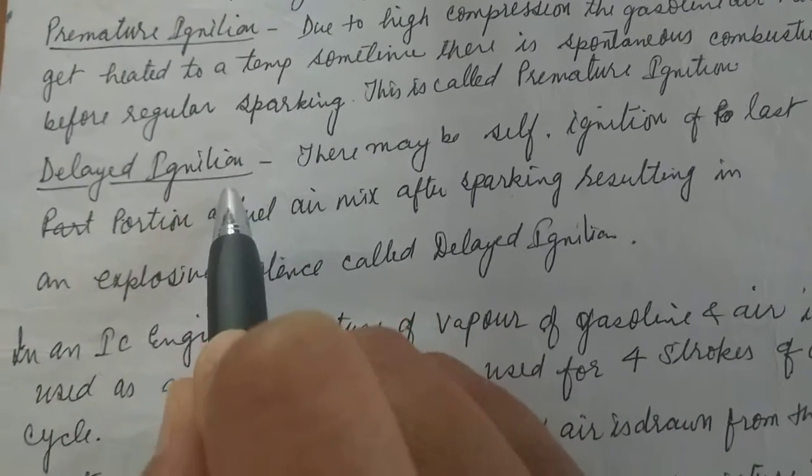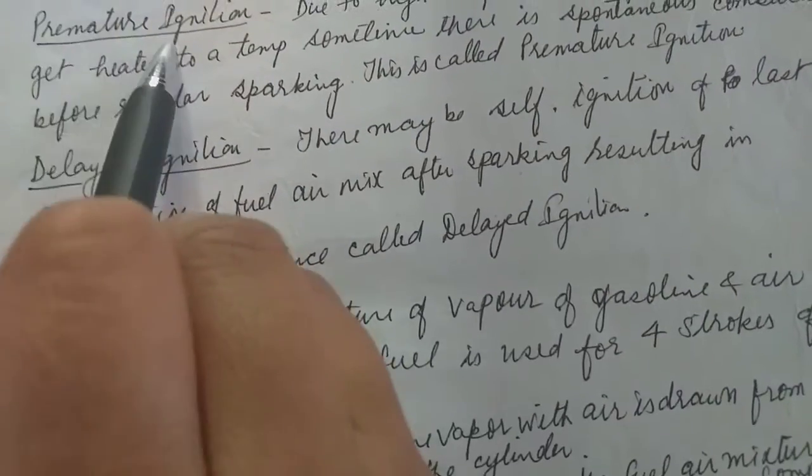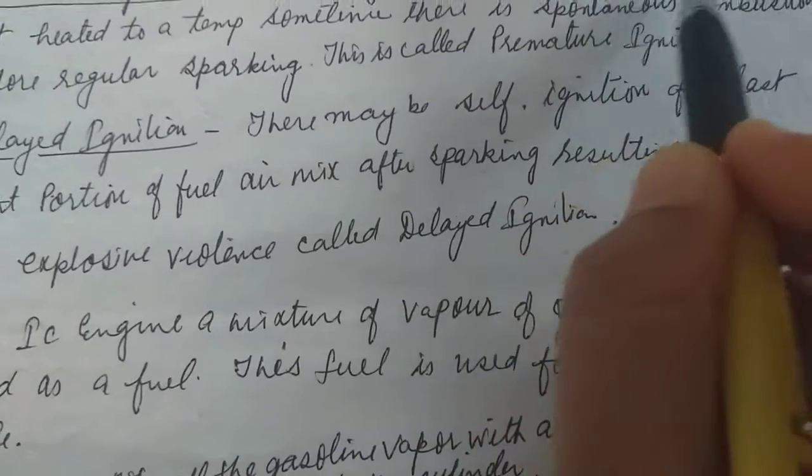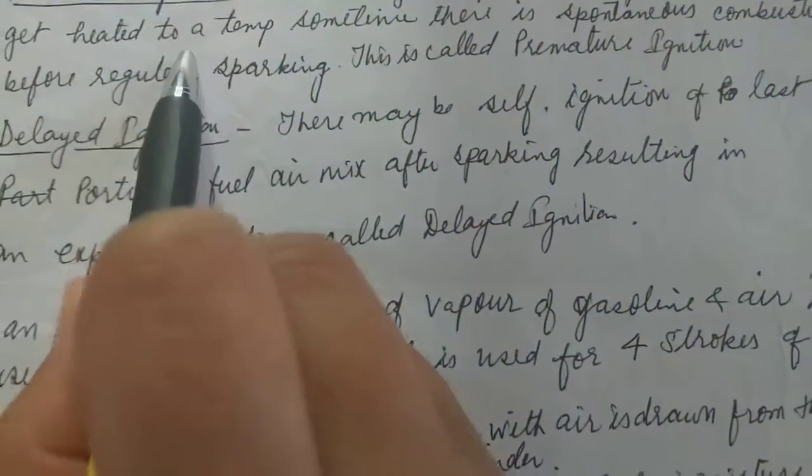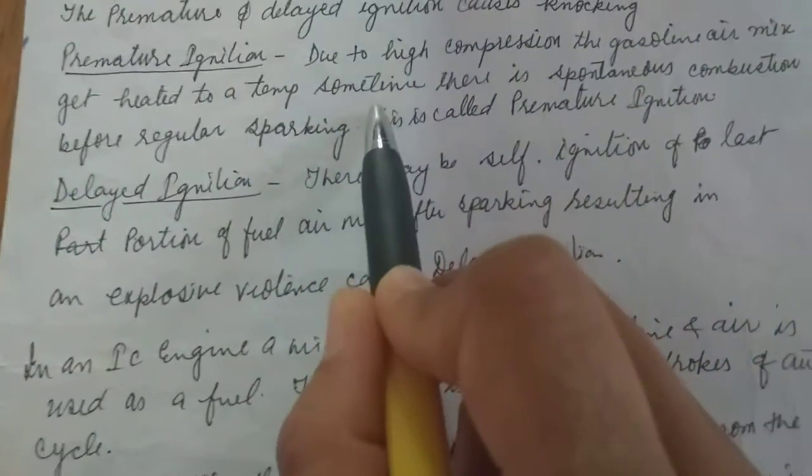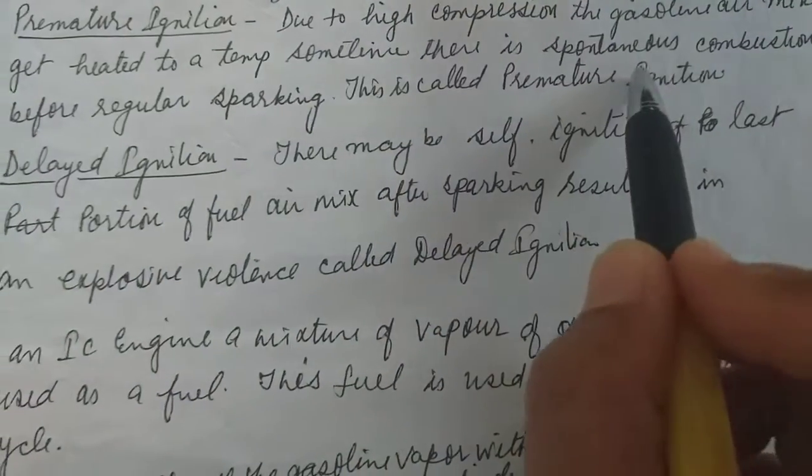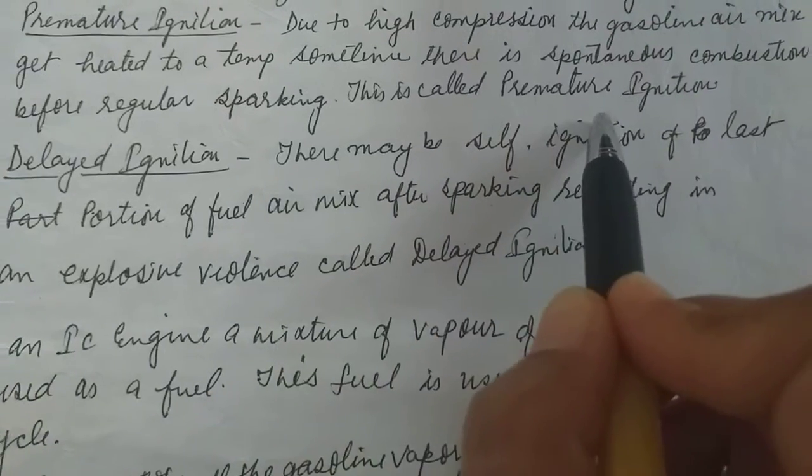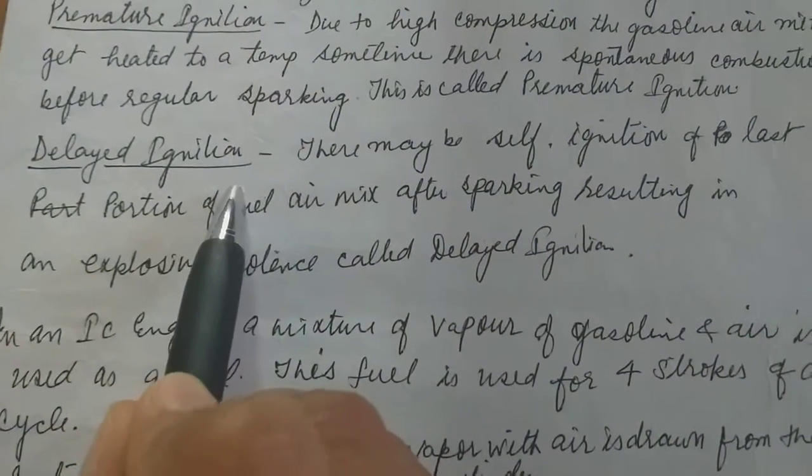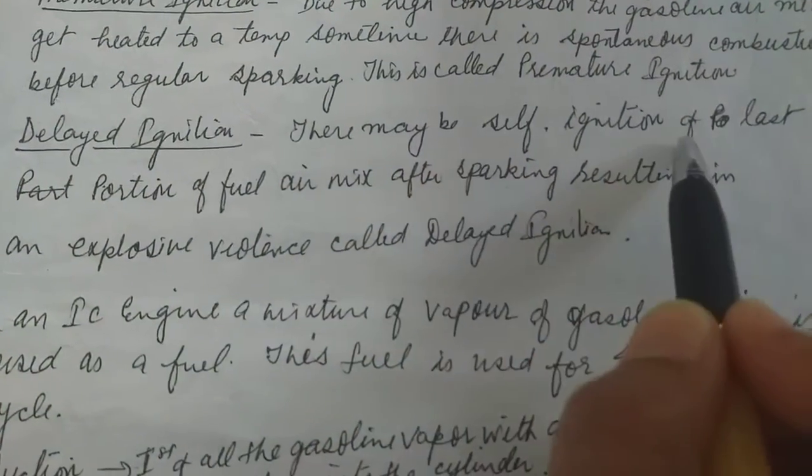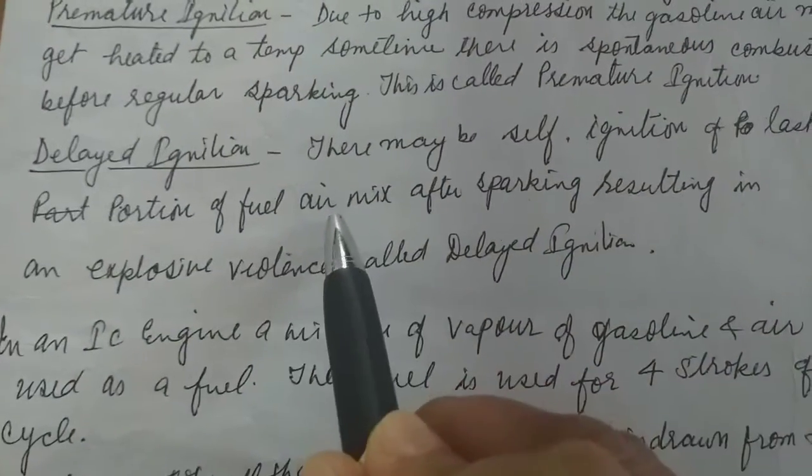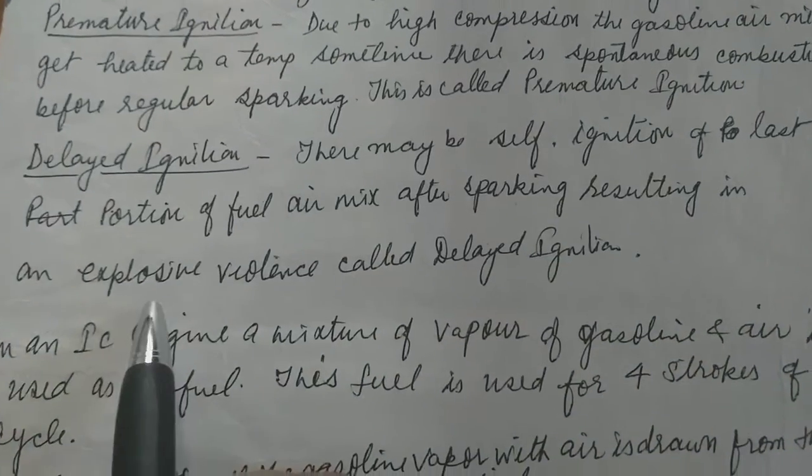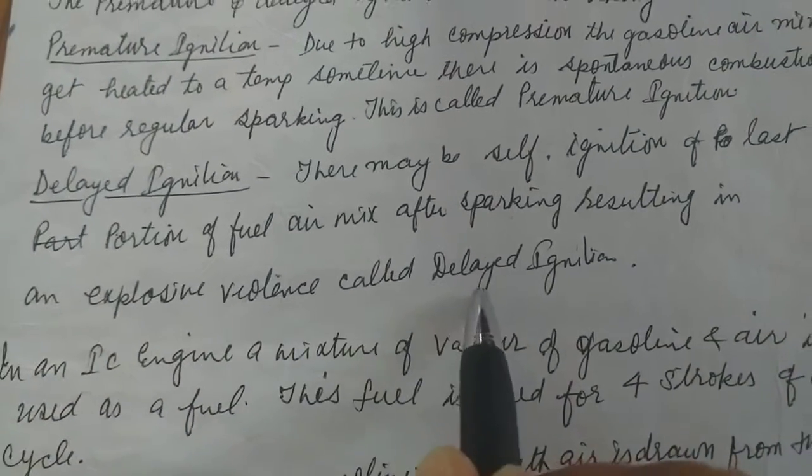Delayed ignition definition: Due to high compression, the gasoline air mixture gets heated to a temperature where there is spontaneous combustion before regular sparking. This is called premature ignition. Delayed ignition occurs when there may be self-ignition of the last portion of fuel air mixture after sparking, resulting in an explosive violence called delayed ignition.